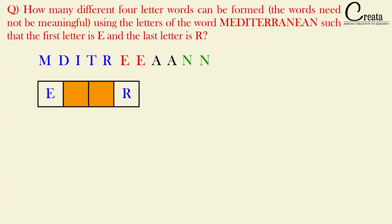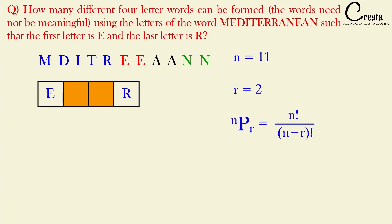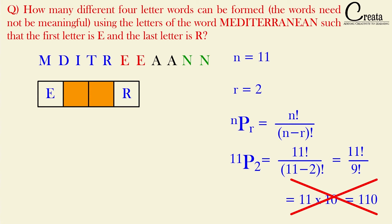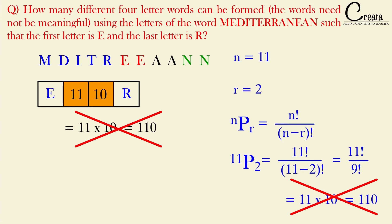Another incorrect approach: since n = 11 input letters and r = 2 vacant spaces, apply the permutation formula nPr = n! / (n−r)!, giving 11 × 10. This same answer comes from the fundamental principle of counting — 11 choices for the first slot, 10 for the second. But this answer is also wrong.